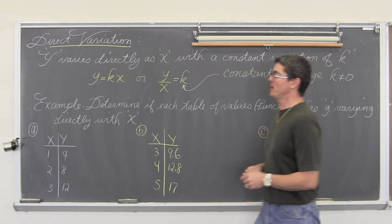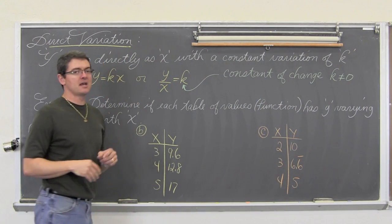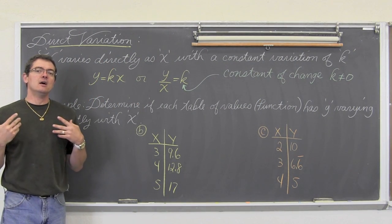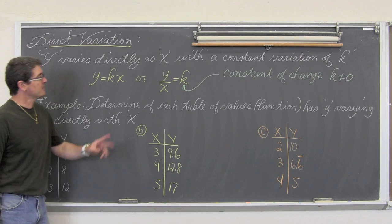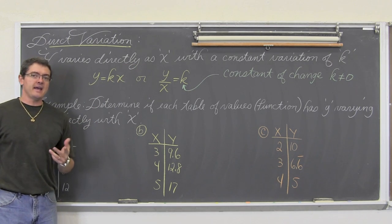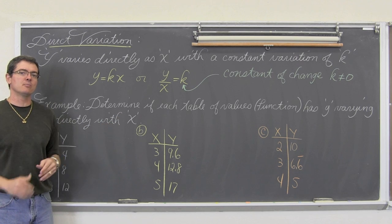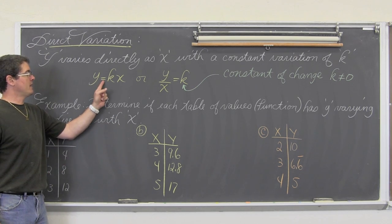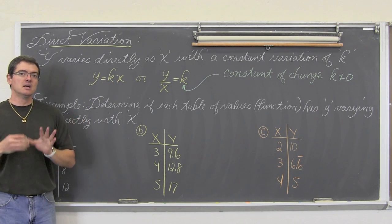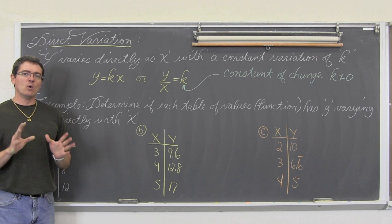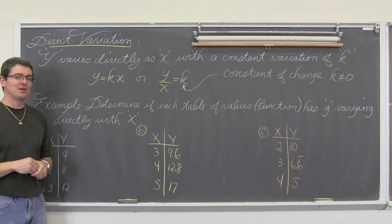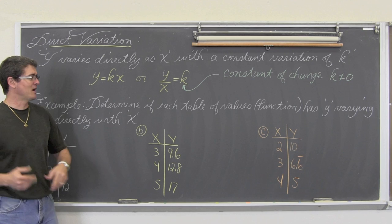So direct variation is when y varies directly as x, or your textbook might say y varies directly with x, with a constant variation of k. So the equation, any time you see the word direct variation in your problem, you should just write y equals k times x. Just get that out of the way and not think about what the formula is and just stare at it as you do the rest of the problem. And hopefully use it as well.